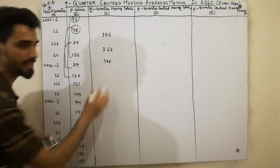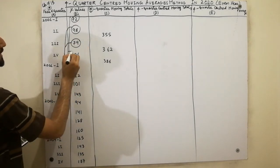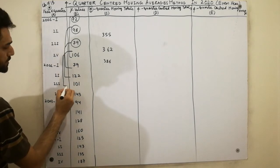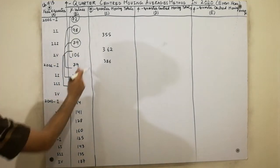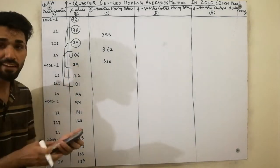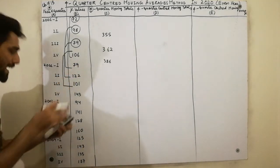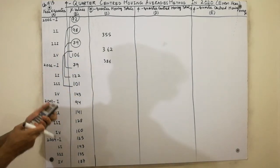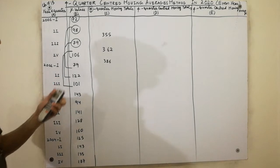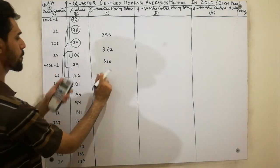We leave that value and move to the next four values: 106 plus 79 plus 122 plus 101. We get the value 408. The center position for this total is here, so we write 408 in the center.